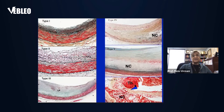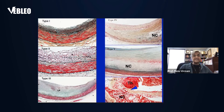Now this shows the actual histology. Those were diagrammatic, showing adaptive intimal thickening, pathologic intimal thickening, foamy macrophages present — that is fatty streak — pathologic intimal thickening, fibroatheroma, thick fibrous cap, and plaque rupture. You can see the necrotic core has ruptured and there's an overlying thrombus.